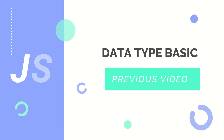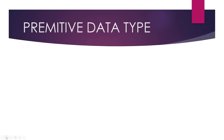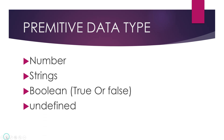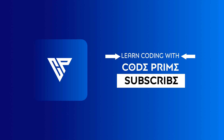Hi everyone. In the previous video we talked about JavaScript data types and explained the introduction and basics. From today we are going to do the practical for the primitive data types. You know the primitive data types are about five types: number, string, boolean, undefined, and null. So we are going to do the practical for all of these primitive data types. Let's start this video.